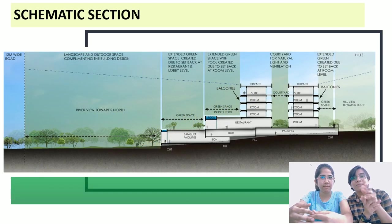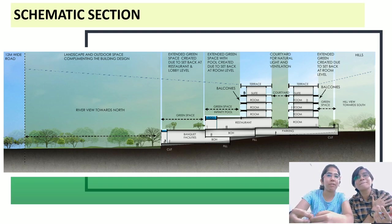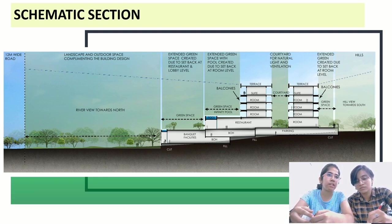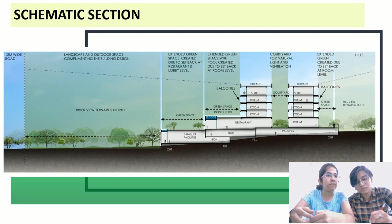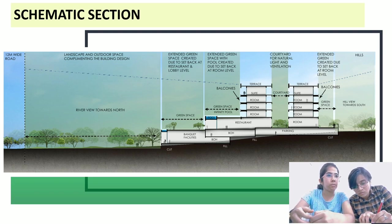Here comes the schematic sections. We have landscape and outdoor space which complements the building design in front of the banquet facilities, and a nice river view towards the north. We have extended green space created at the setback at the restaurant and lobby level, just above the banquet. We also have an infinity pool with extended green space created due to the setback at the room level. At a 6 meter high level, we have the hotel rooms with internal courtyards for natural light and ventilation.